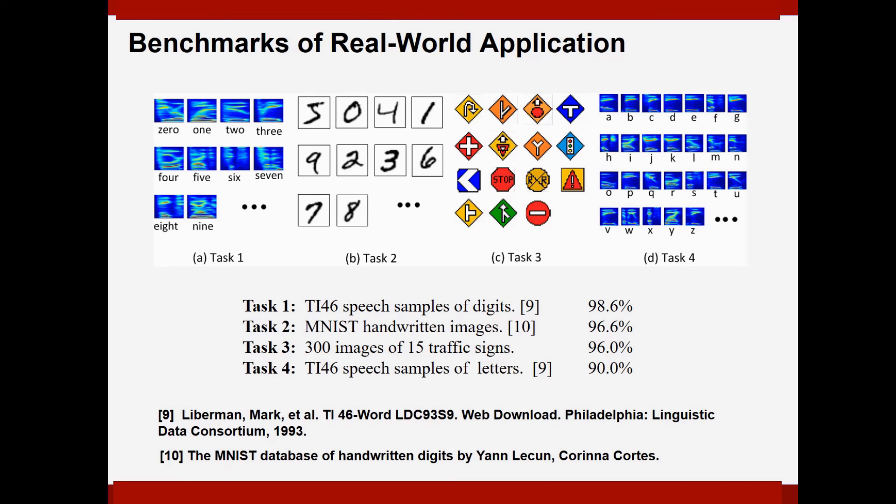And four popular public domain benchmarks of real-world applications are used in this work. Two of them are for the speech recognition and the other two for the image recognition. And as we can see, decent recognition rates have been achieved for all these benchmarks.